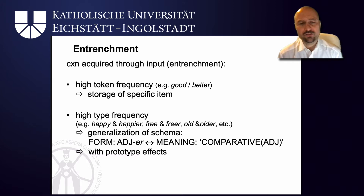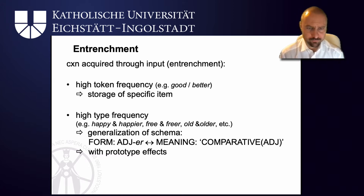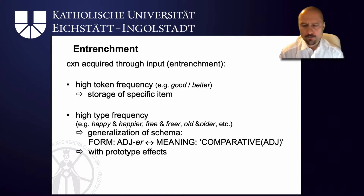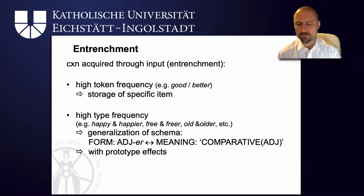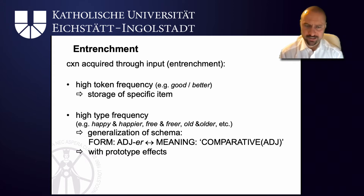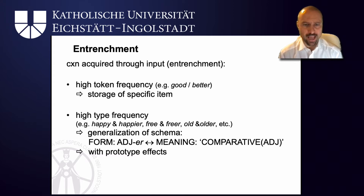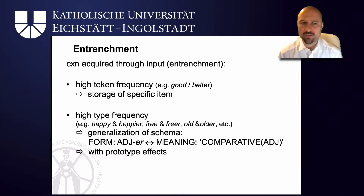The meaning of this schema is comparative — happier, freer, older. And you will remember the study by Casenhiser and Goldberg: we do expect some kind of prototype effects here. So some of the specific types like happier and freer might be much more frequent than others.